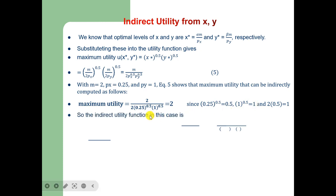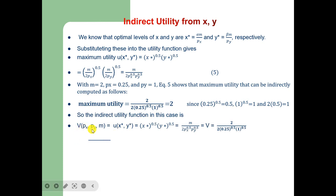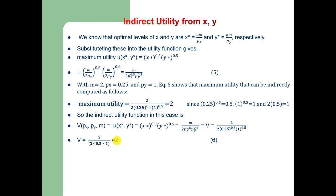The indirect utility function is v(p_x, p_y, m) = 2 / (2 * 0.25^0.5 * 1^0.5), and solving this gives the maximum utility the consumer can attain equal to 2.